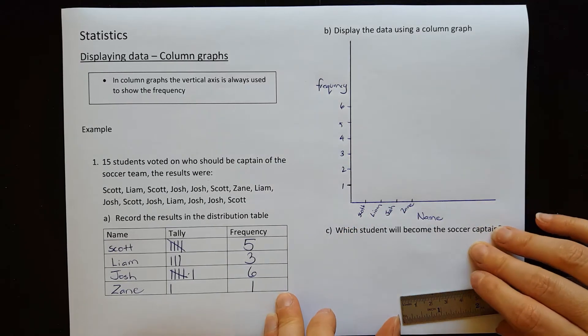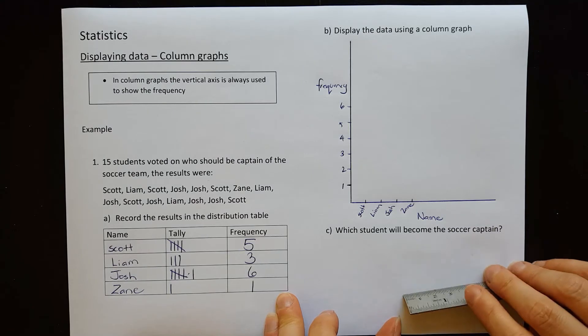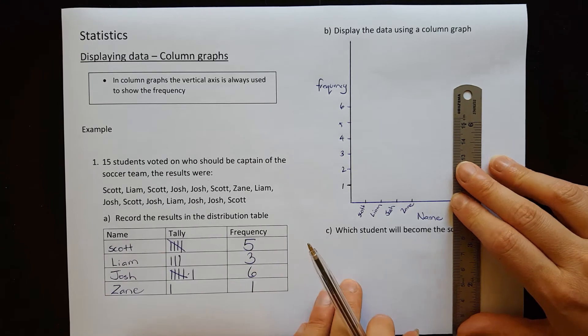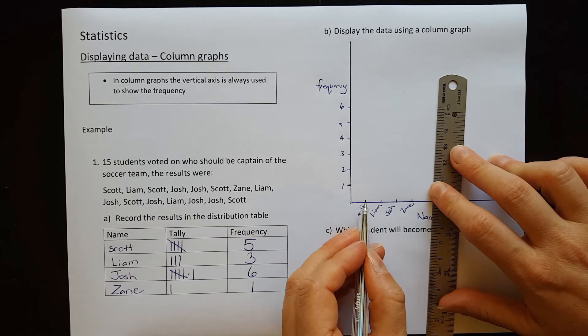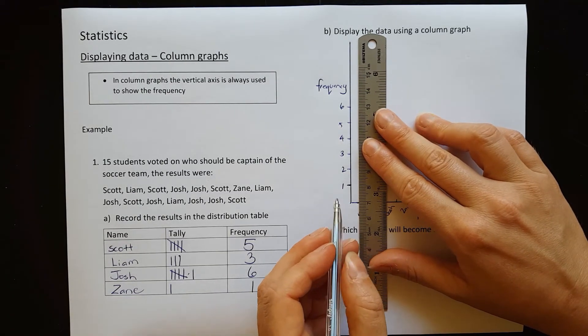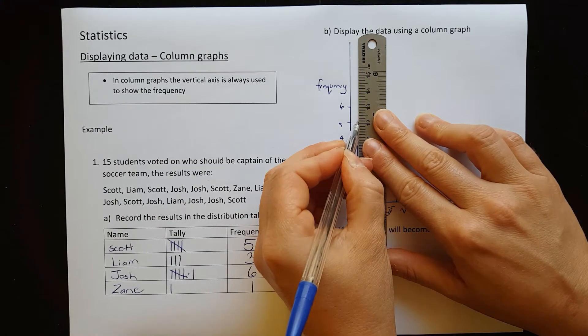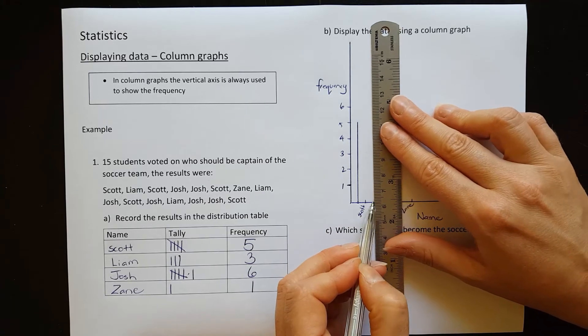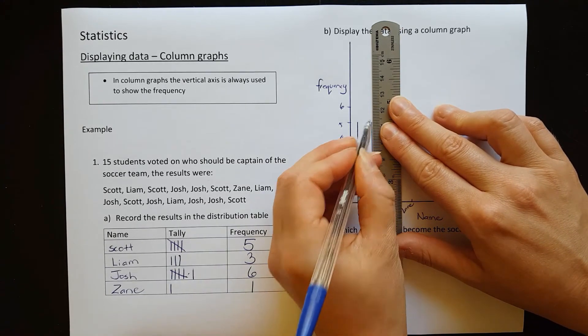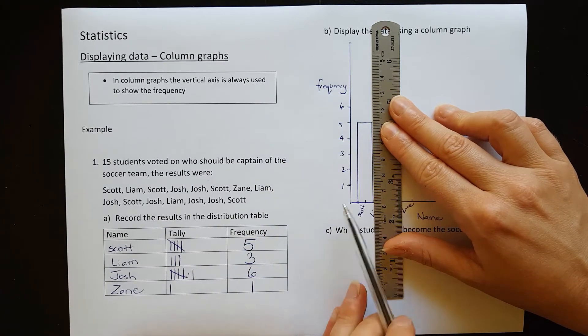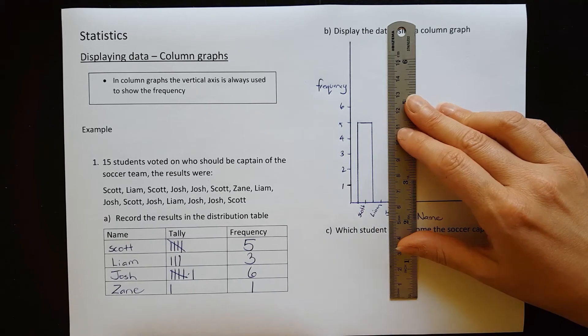So now we want to draw a column for each of those. Let's start with Scott. He has a frequency of five. What we do is we start halfway between the beginning here and Scott. We're going to start our column here and we're going to go up to the number five. And then halfway from Scott to Liam, we're going to draw another line going up to the five. And if we join across the top, that is our first column.